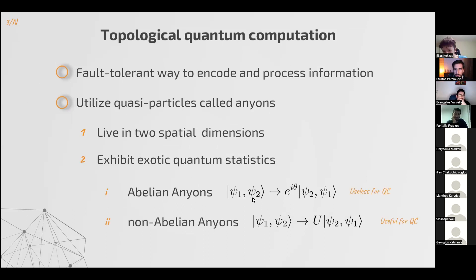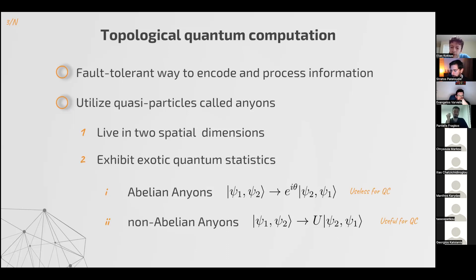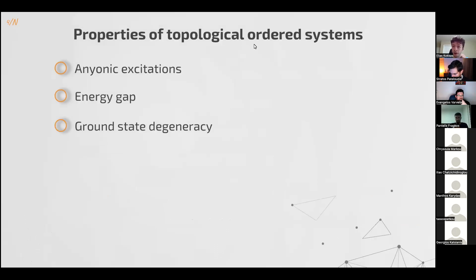We cannot use abelian anyons for quantum computation. It turns out that because there is just a global phase, all the quantum gates we can construct from them are going to be trivial — proportional to the identity — so they are not very useful. That's why we are more interested in the non-abelian anyons case, where we can have something more complex that will allow us to do useful calculations. The question is: what type of systems can we use for topological quantum computation?